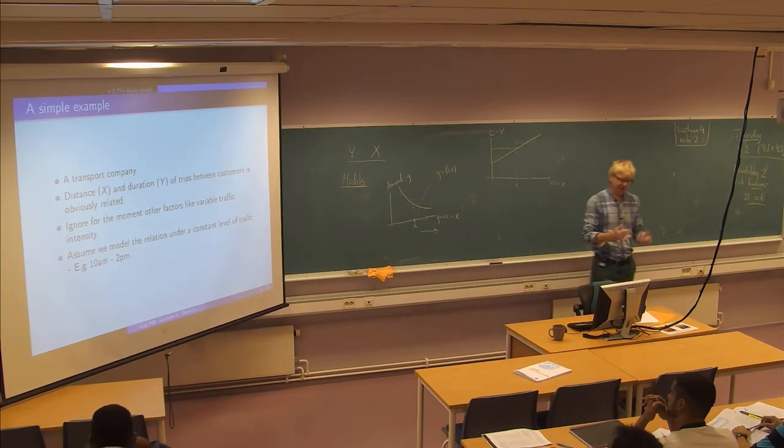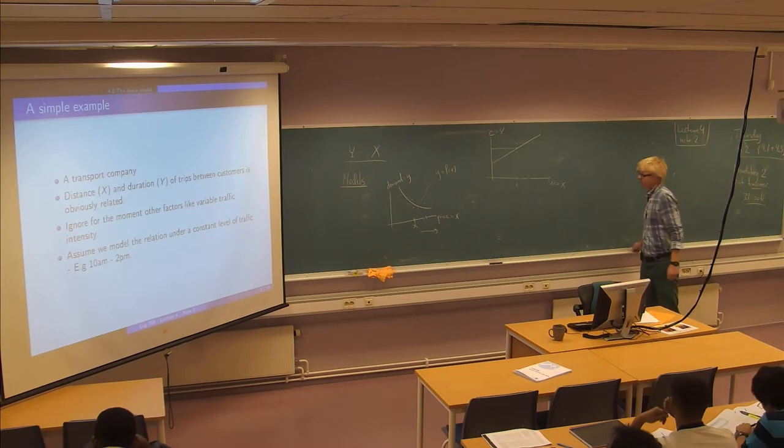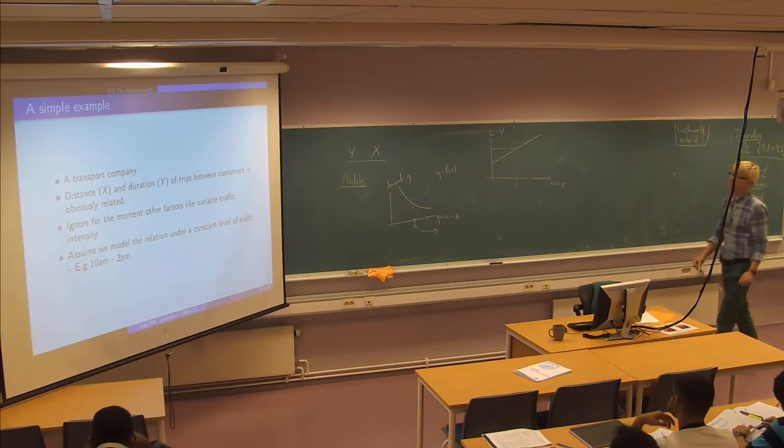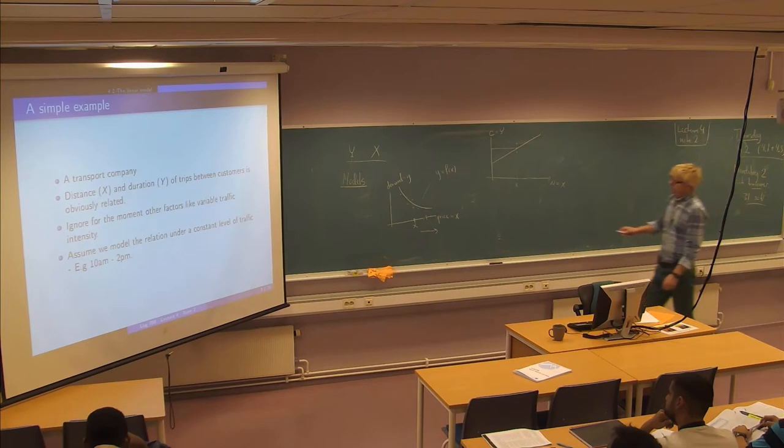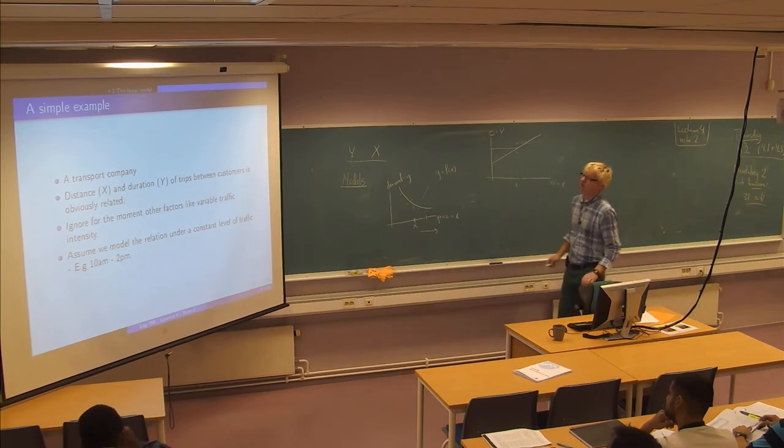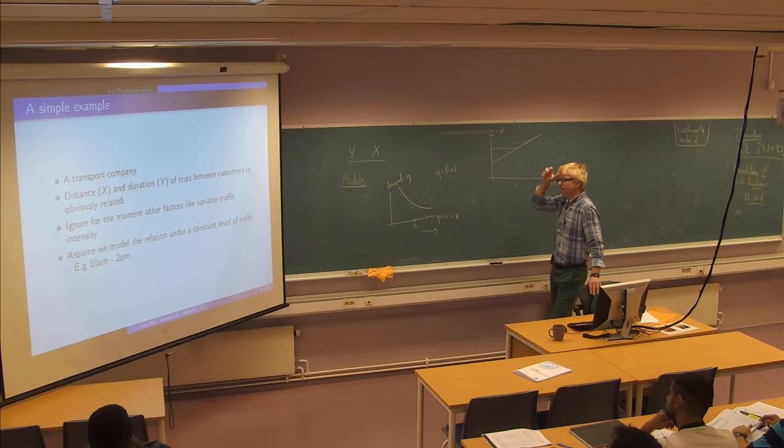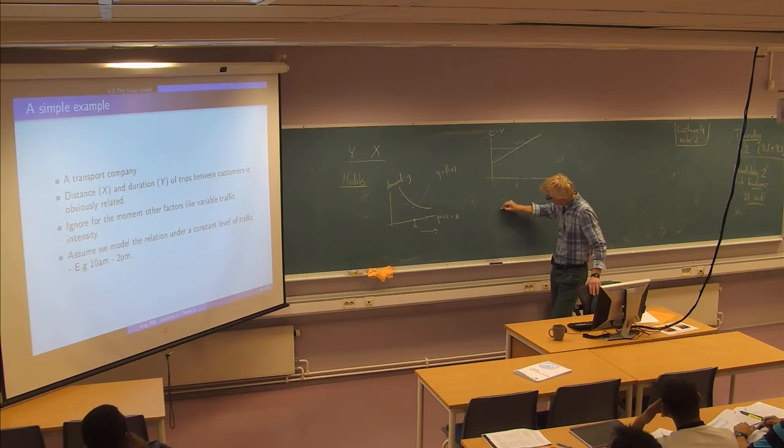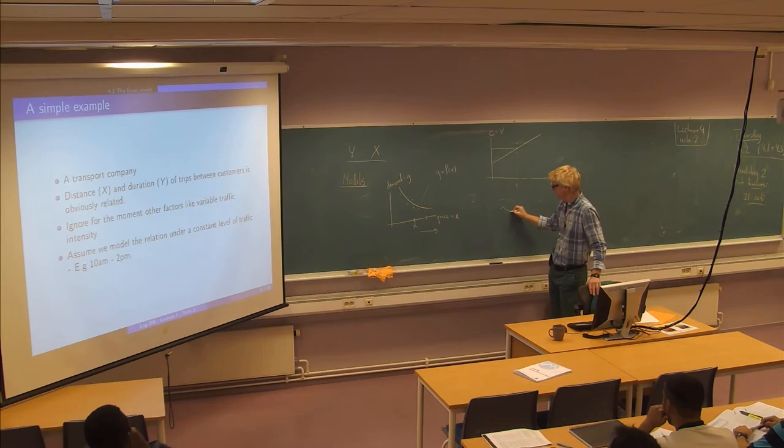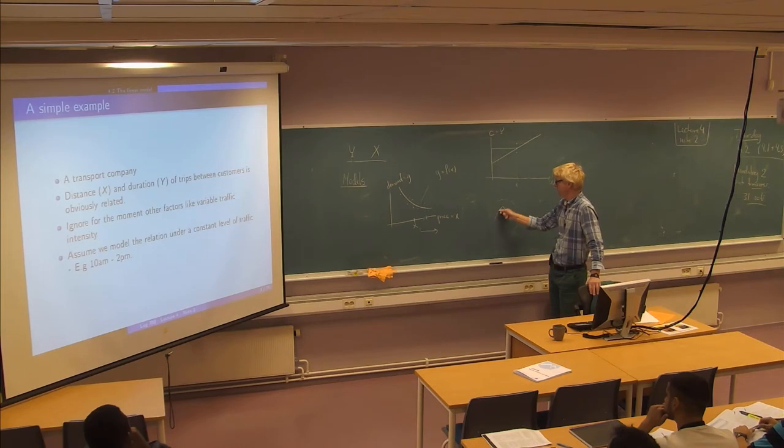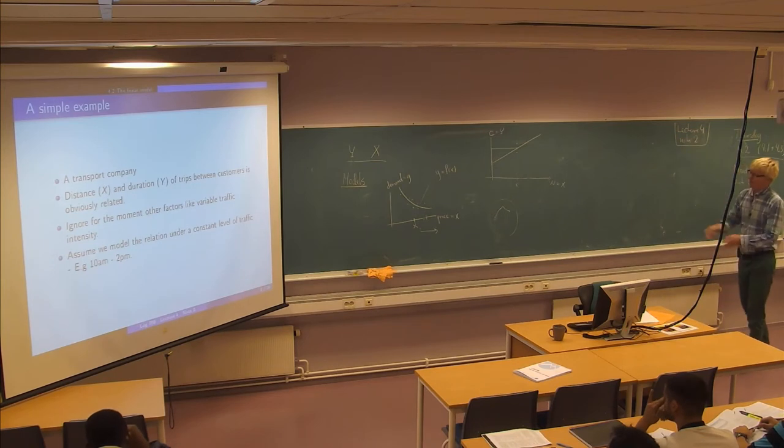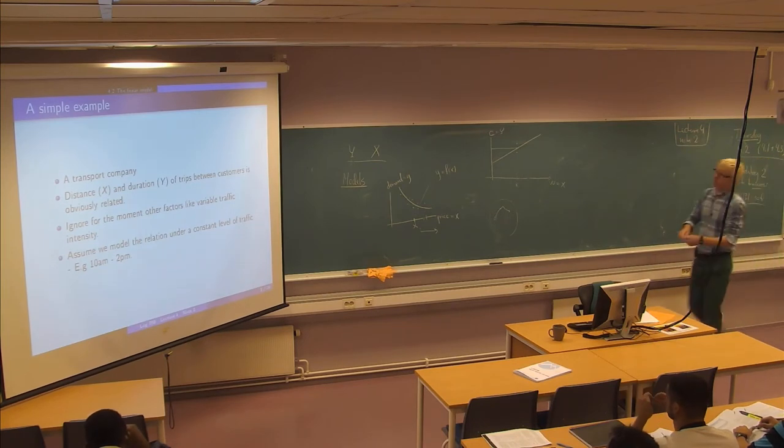So we are going to look, once again, at this data that I have shown you some time before, just because it's very transparent. So we have transportation company and they have, maybe in a city, they have a number of trips they need to perform. And each trip is between two customers probably, sometimes between a depot and a customer. But they can split their part of their planning situation into trips like this. And each trip has a distance.